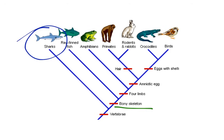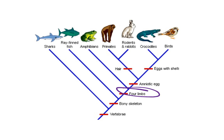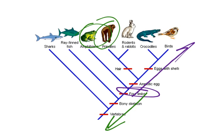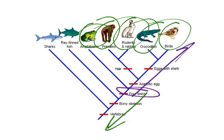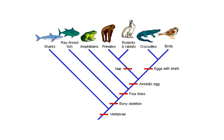We can continue and move up the cladogram. The next characteristic is four limbs. Every organism from this point in the cladogram on is going to have four limbs, and every organism from this point back will not. So obviously, amphibians, primates, rodents, crocodiles, and birds all have four limbs, while the fishes don't have limbs at all.